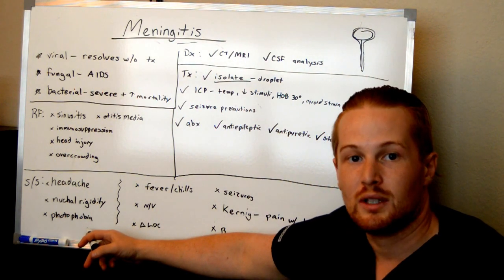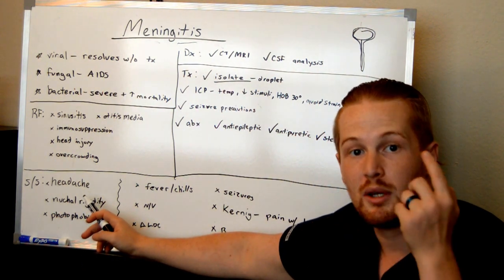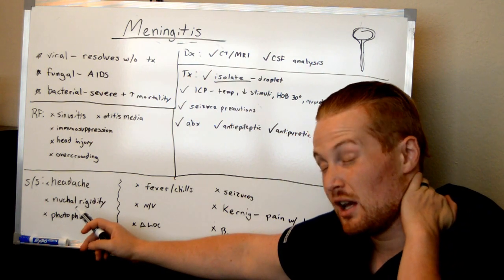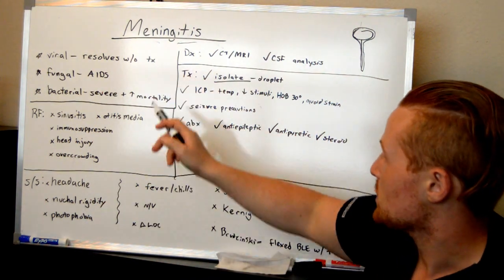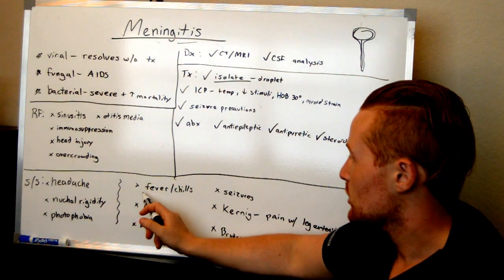This is sensitivity to light. So if you have someone come in with headache, the neck is real stiff, and they've got photosensitivity, those are the three main things you want. Red flag, meningitis. Also, they have infection, so they can have fever and chills.